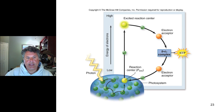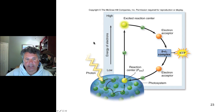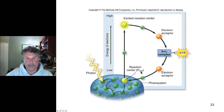Up to now we've been considering, in general terms, oxygenic photosynthesis, but some bacteria don't generate oxygen. This is anoxygenic photosynthesis. These bacteria, like for example the purple non-sulfur bacterium shown here, use a reaction center with a maximal absorbance at 840 nanometers, and they capture energy much like any photosystem would.